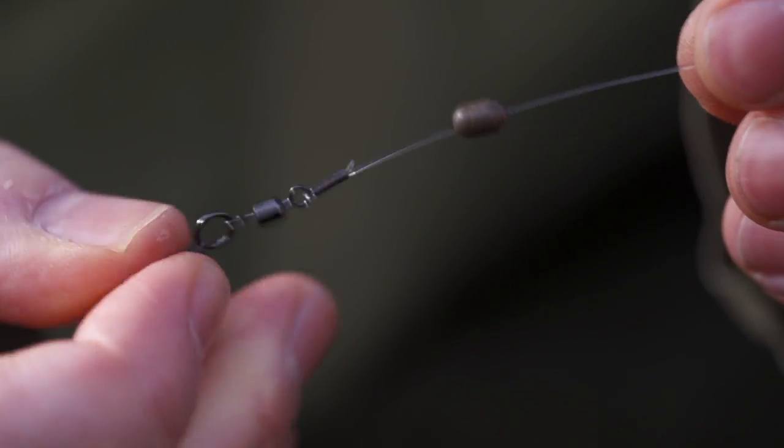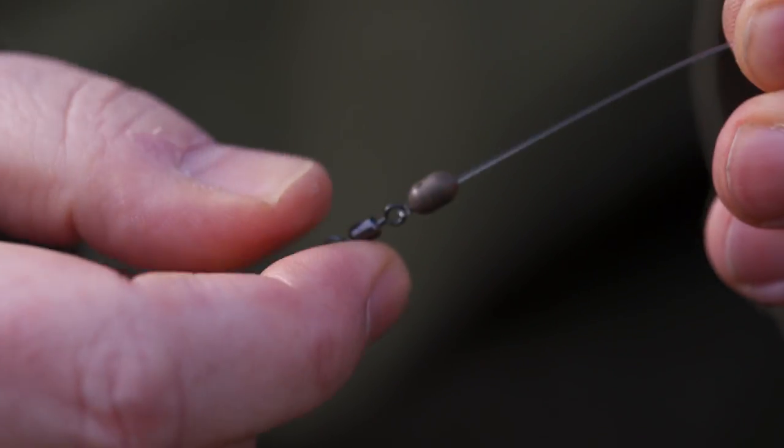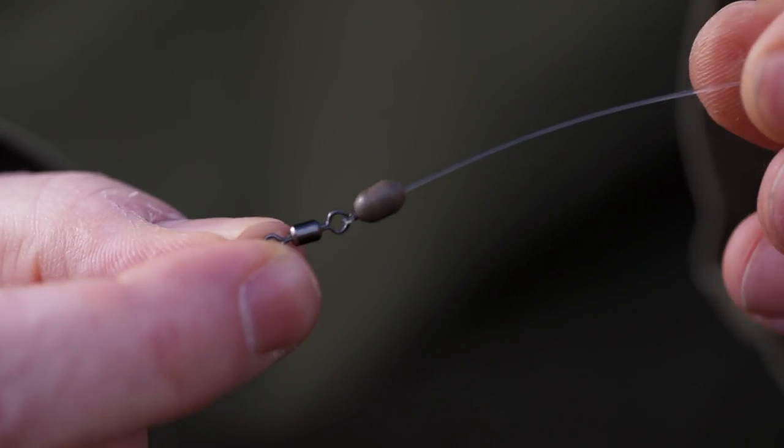For those that prefer to use one of the little double-barrelled crimps as opposed to tying a knot, the balance beads can be drilled out with a 1mm bait drill and then they plug nicely onto the crimp.